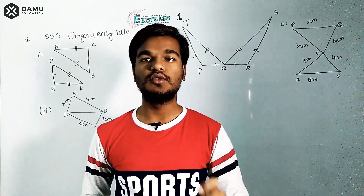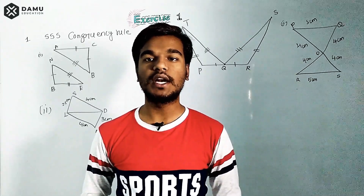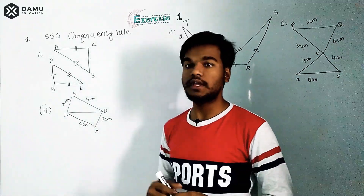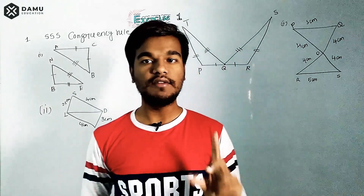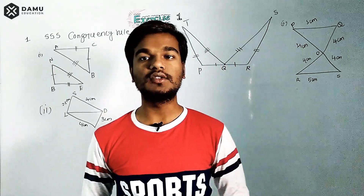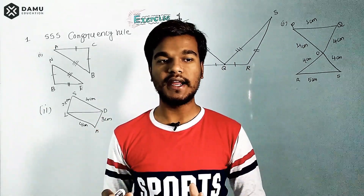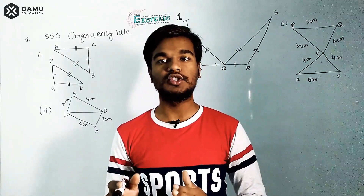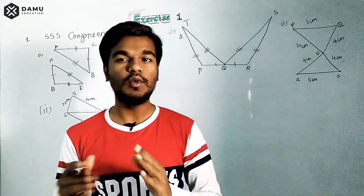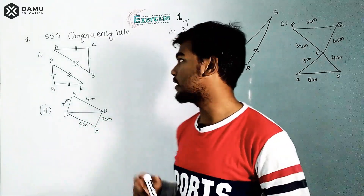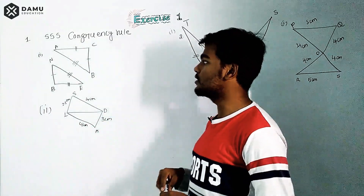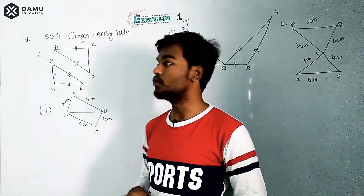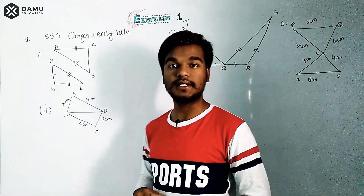Then you can say the two triangles are congruent to each other. SSS congruency means that in any two given triangles, all three sides from one triangle match with all three corresponding sides in the other triangle. In our first question, we need to check whether the triangles satisfy SSS congruency or not.